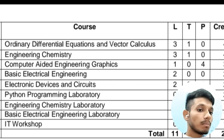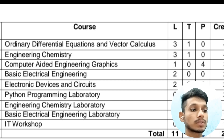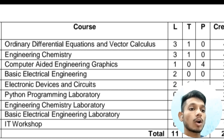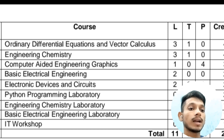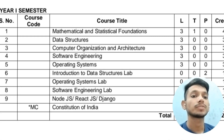You will also have a non-credited subject, Environmental Science, and 20 credits for this complete semester. In the second semester of first year, there are nine subjects including labs. The subjects are: Ordinary Differential Equations and Vector Calculus, Engineering Chemistry, Computer-Aided Engineering Graphics, Basic Electrical Engineering, Electronic Devices and Circuits, and labs for Python Programming, Engineering Chemistry, Basic Electrical Engineering, and an IT Workshop.